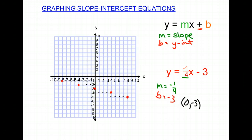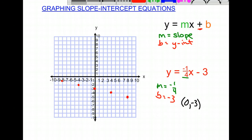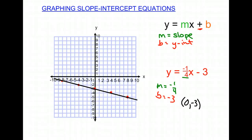And here we have it. We can erase those extra points that aren't necessary so that we're just left with our points for the linear graph. Then we make a line through the points so that we have our linear equation graphed on the x, y-axis. And that is how you graph a slope-intercept equation.